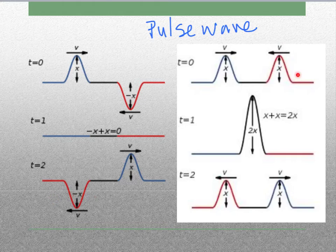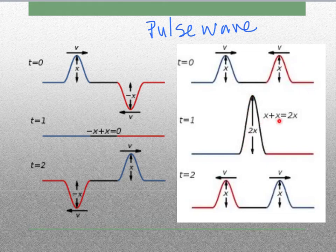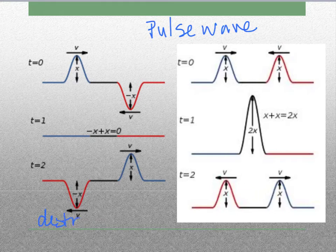Now if they're in the same direction — both positive x — they have the same amplitude and run into each other. Where they overlap, we get an amplitude that is twice as tall because we've added both amplitudes together. Neither wave is destroyed; they don't stop or disappear. Both waves will separate and keep going in different directions. This side is an example of destructive interference, and this side is an example of constructive interference.